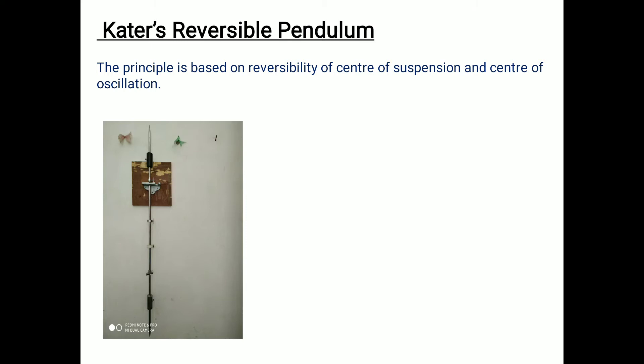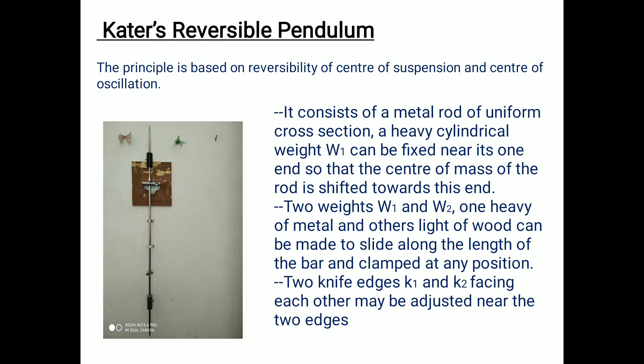The basic principle on which Kater's reversible pendulum is based is the center of suspension and center of oscillation. The reversibility between these two centers is why this pendulum is called a reversible compound pendulum. Kater's reversible pendulum consists of a metal rod of uniform cross-section. A heavy cylindrical weight W1 can be fixed near one end to shift the center of mass. There are two weights, W1 and W2 — one metallic cylinder and one wooden cylinder.